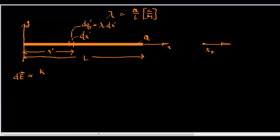dq prime, and the length is going to be squared. The length from here to here is just x naught minus x prime. x naught minus x prime. And that is squared.